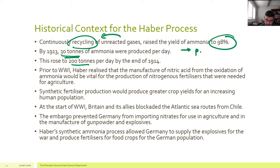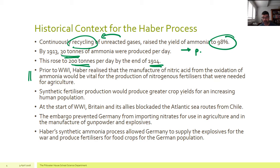Production rose to 200 tonnes per day by the end of 1914 — a fairly important date in world history — so the production of ammonia was now very large scale. This all took place just prior to the First World War, and what Fritz Haber realised was that if we wanted to produce nitric acid, we could do that from the oxidation of ammonia, which would then be very important as a source of nitrogen fertiliser for agriculture.